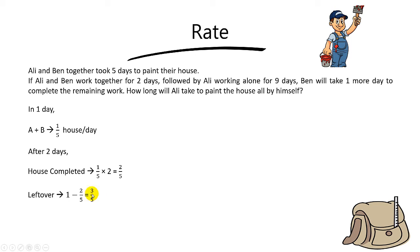So far so good? So we know that after 2 days, they have completed 2 fifths of the house. And now they need to complete 3 fifths of the house. And how do they complete this leftover? Ali worked for 9 days, while Ben worked for 1 day.